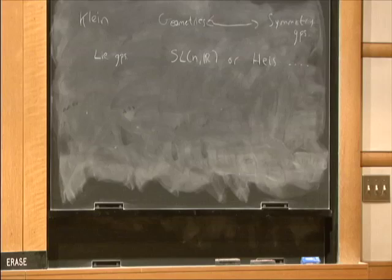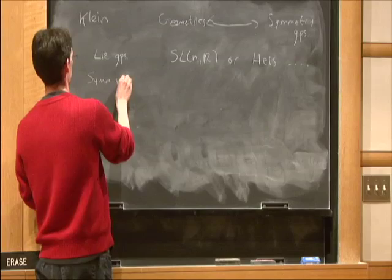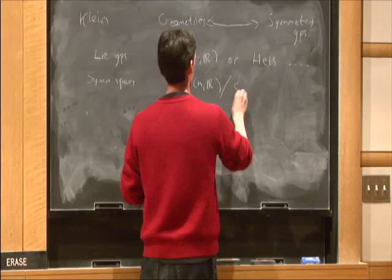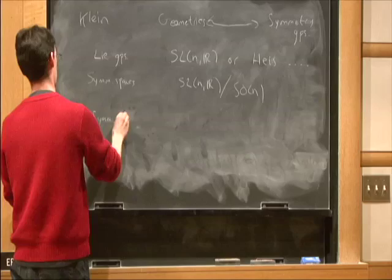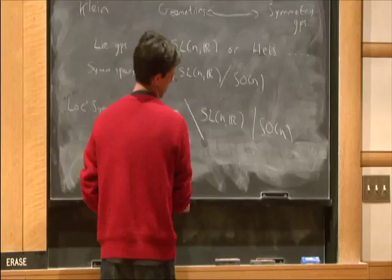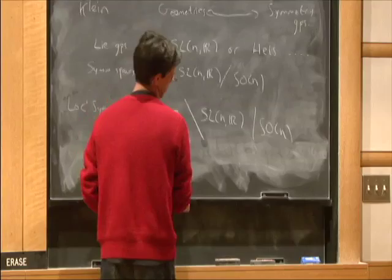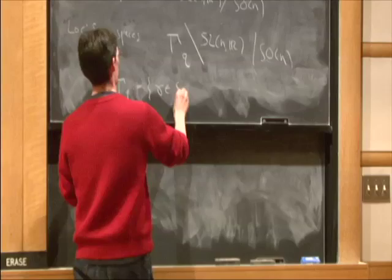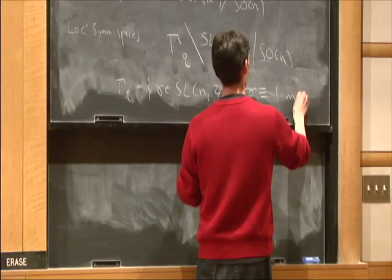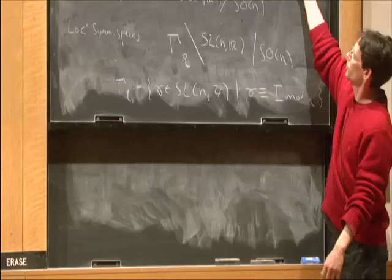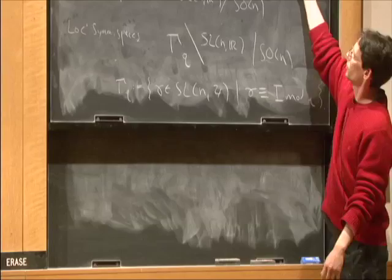Or we could look at symmetric spaces, like SL(n,R) modulo SO(n). Or we could look at locally symmetric spaces, like SL(n,R) modulo SO(n) modulo, on the other side, some discrete subgroup, like, for example, arithmetic group gamma Q to be the matrices in SL(n,Z) that are congruent to 1 modulo Q, congruent to the identity modulo Q, or some other interesting discrete subgroups.